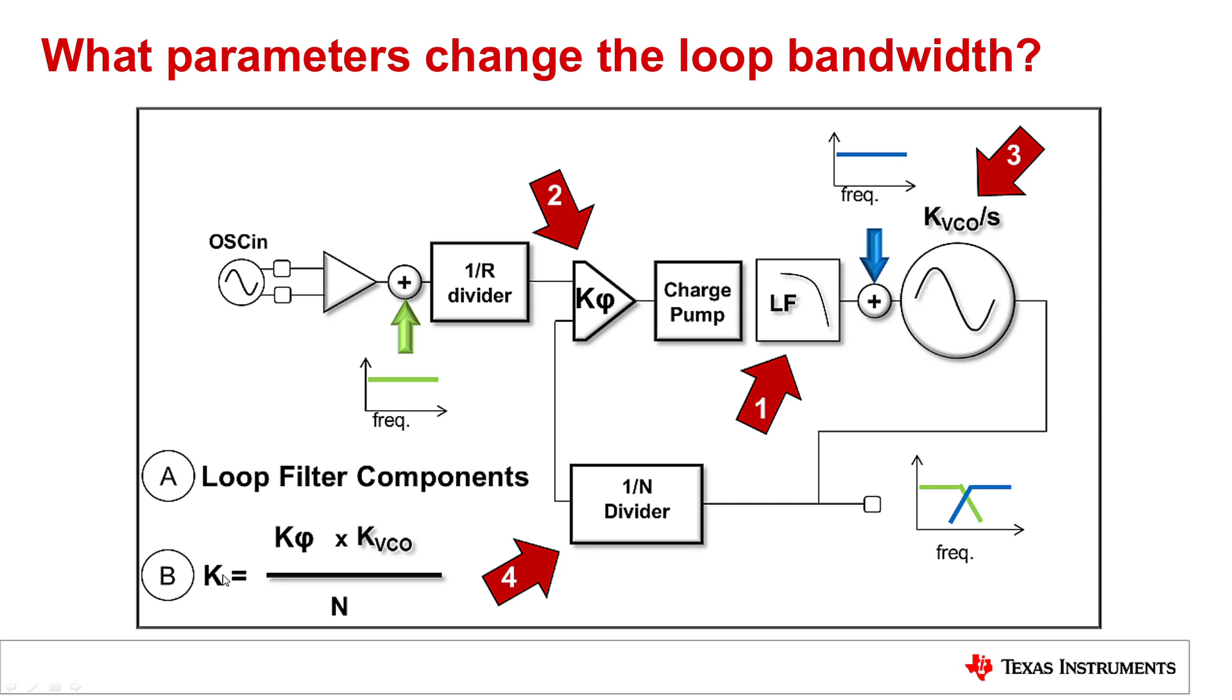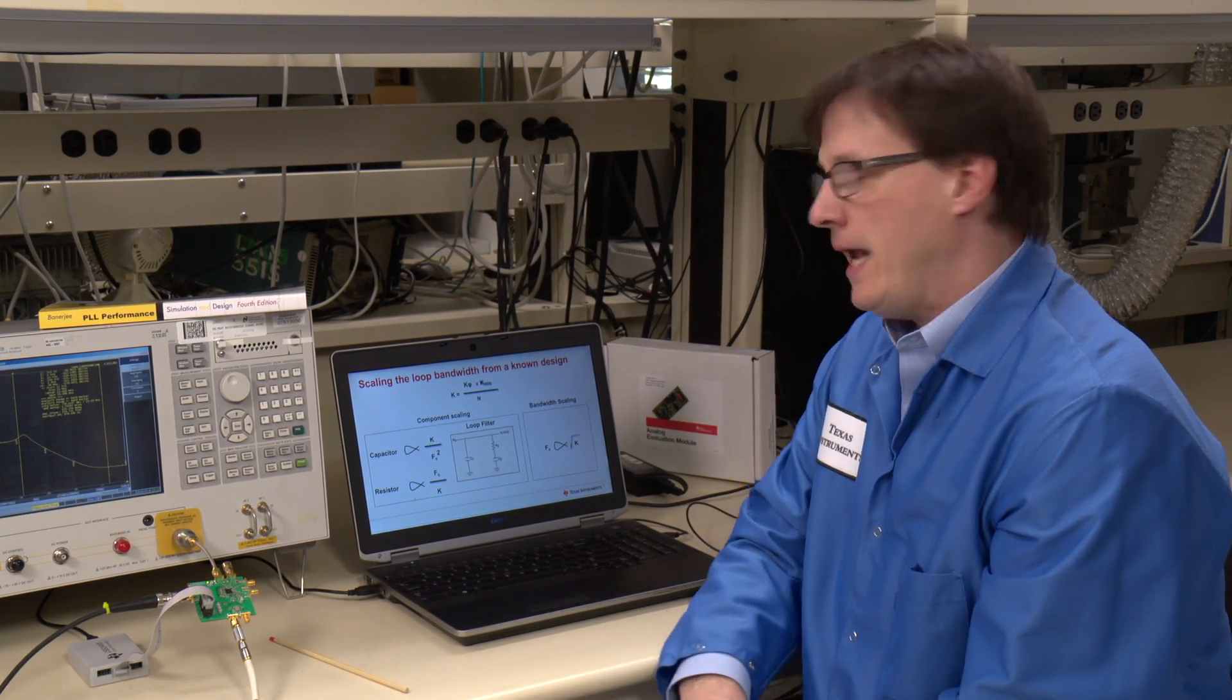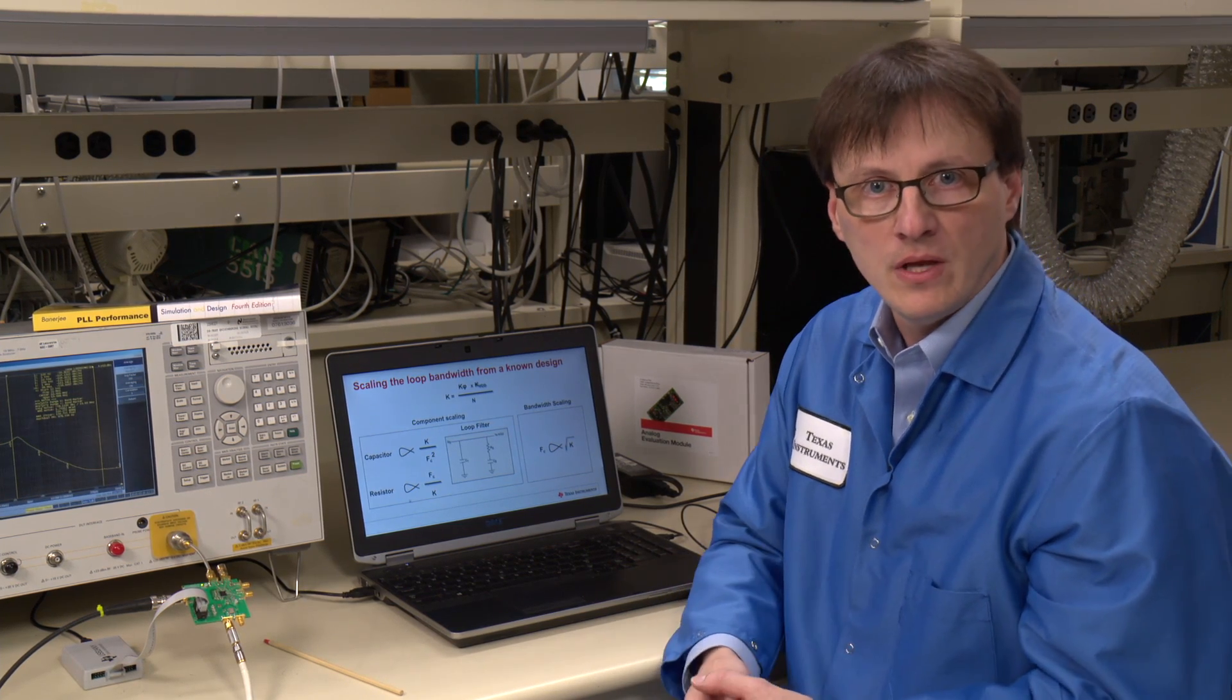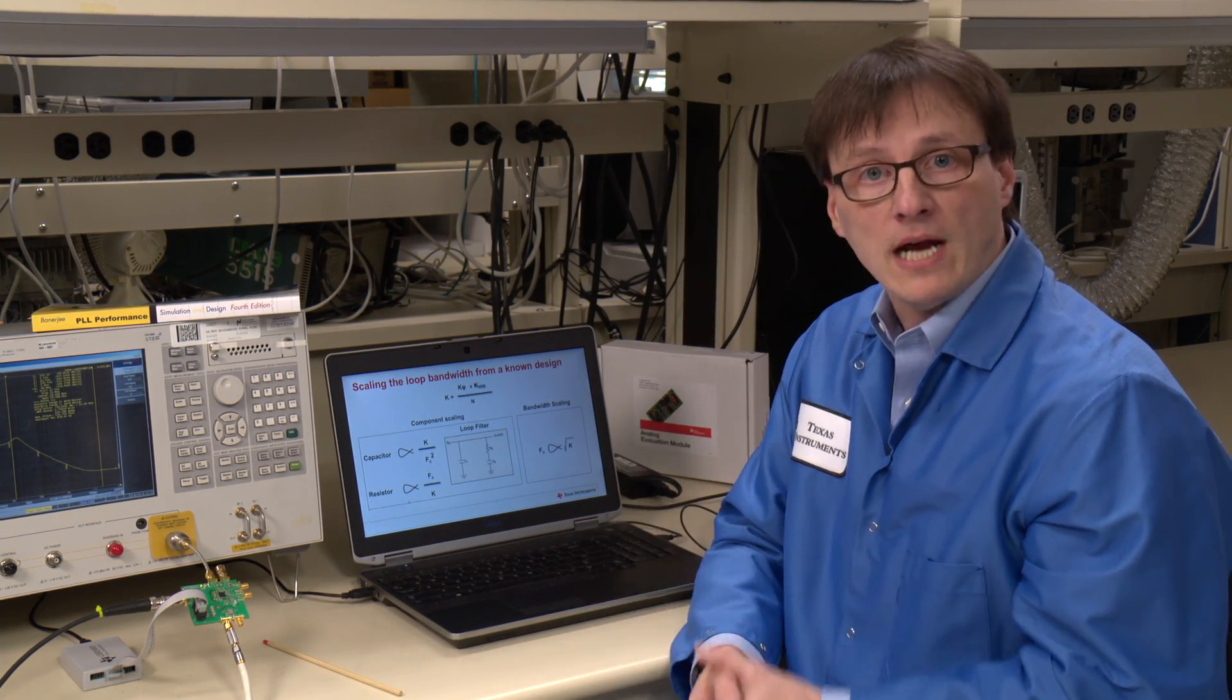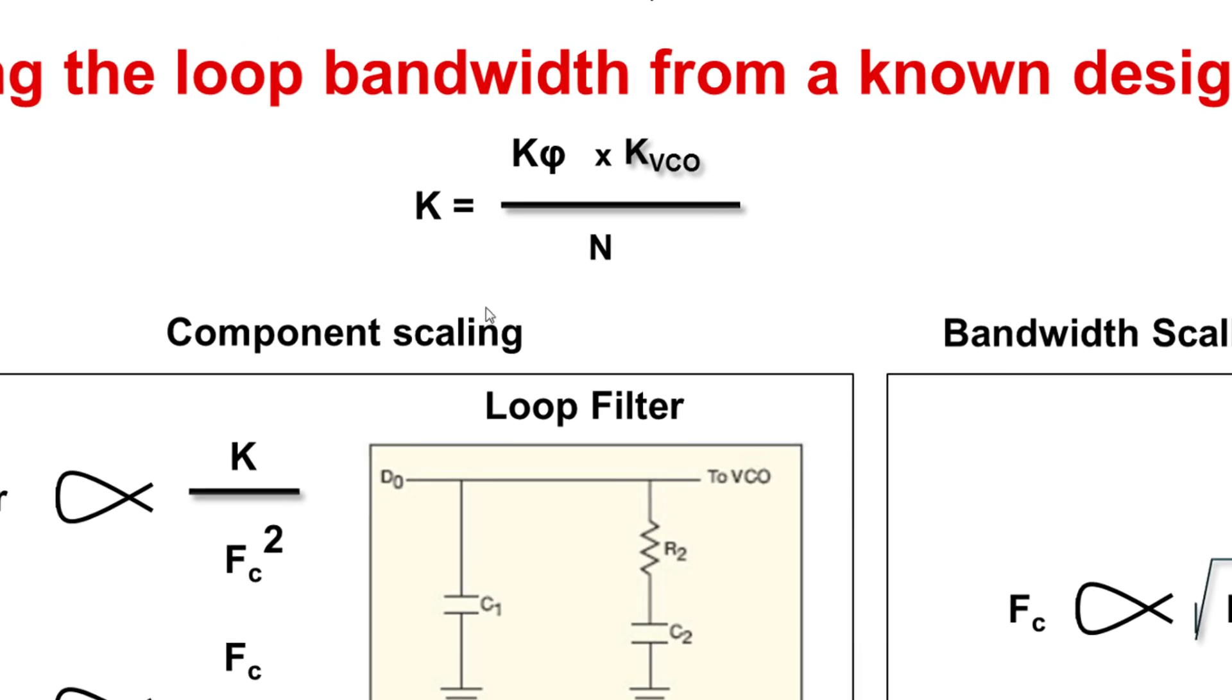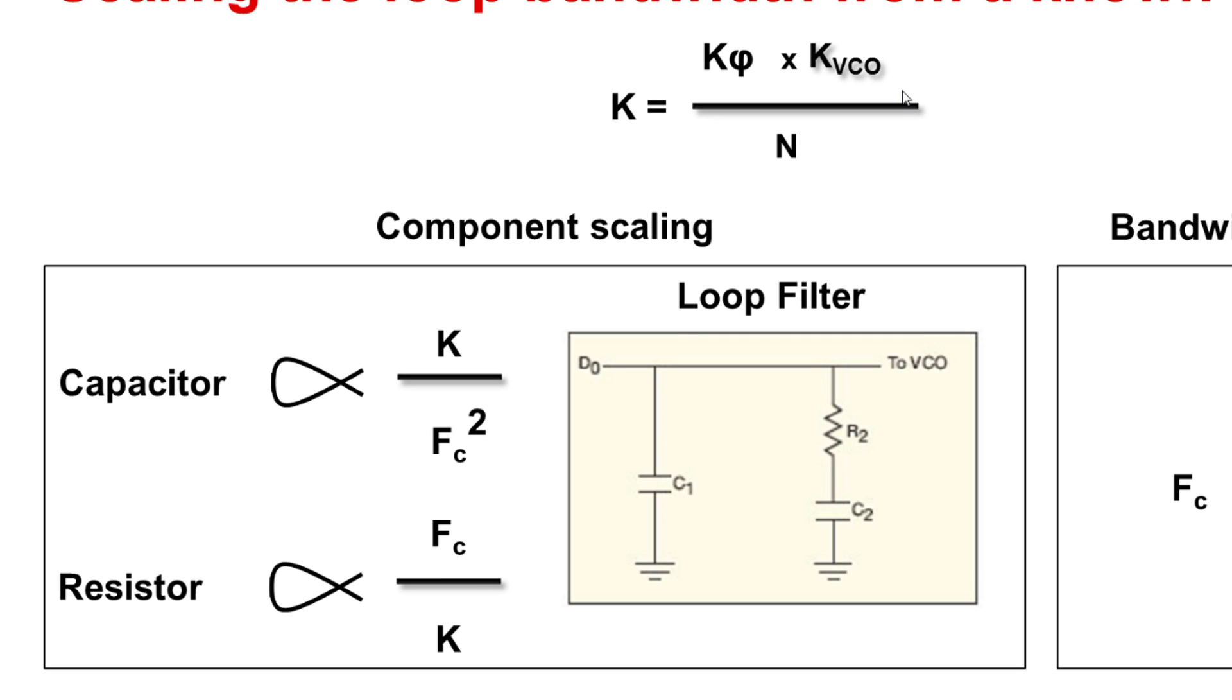Now I'm going to talk about scaling. I'm in the lab and I have a certain loop filter that works, or I want to change some parameters and I want to quickly know how it scales. I rewrote the equations here, which is the general K gain, which is K phi the charge pump gain, K VCO the VCO gain, and N the division in the feedback loop. When I change this K factor, it's going to have an impact on the loop bandwidth of my phase lock loop.